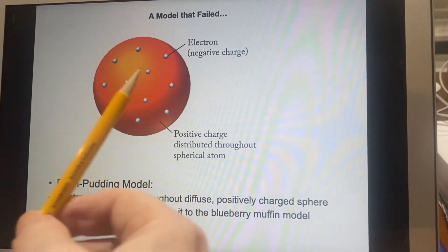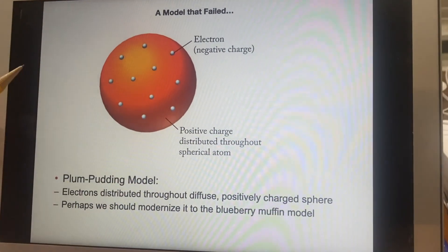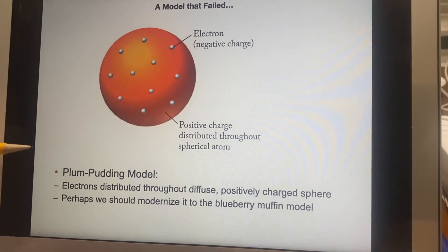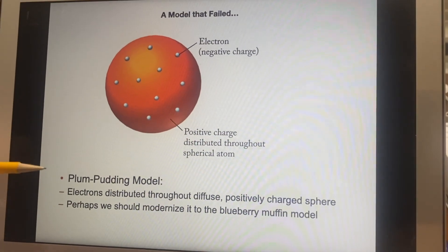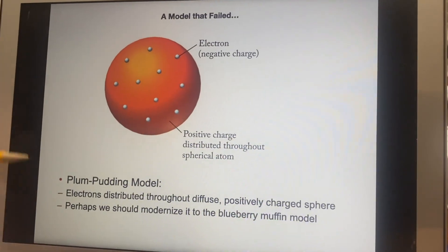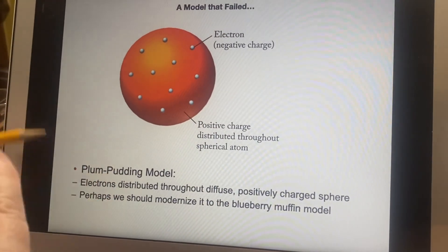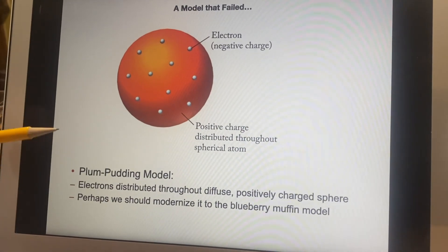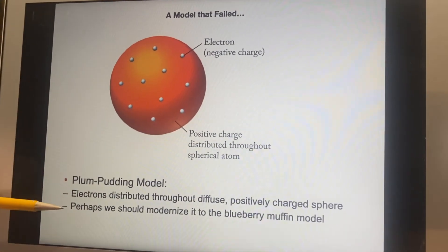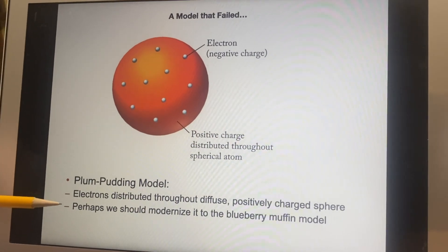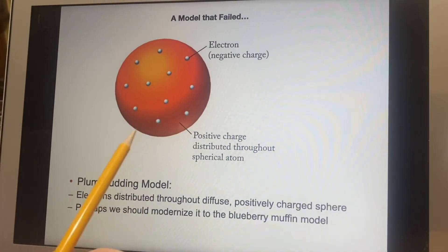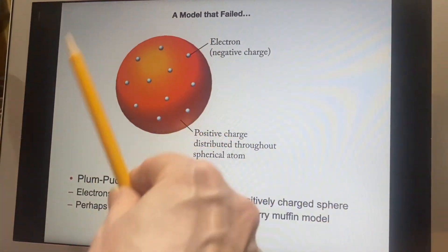Now, because it was an English theory, it got named the plum pudding model. Now, this is a terrible name for any of us who are American because we absolutely do not understand any reference to a so-called plum pudding. To us, pudding is jello pudding. A pudding to English people is more or less almost any dessert. If you think of it as more like the blueberry muffin model, I think you would understand their name more. The electrons are like the blueberries distributed in the whole muffin.